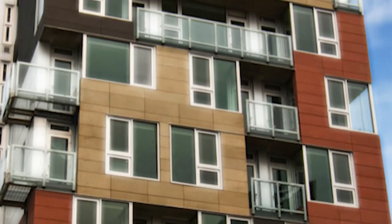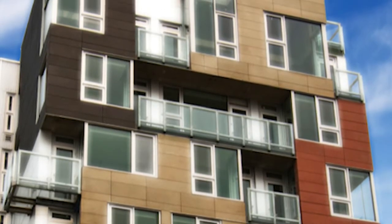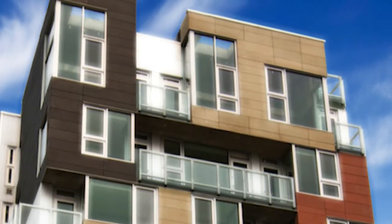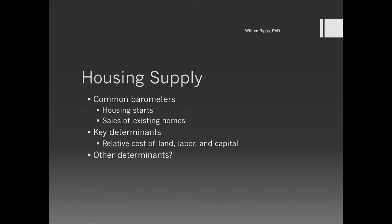Now that we've spent some time talking about basic data sources and an overview of housing markets, let's look at how we get a gut sense of what the supply is and will be in a market. Housing starts, building permits, construction dollars, and sales of existing homes are good barometers for current housing supply. The relative cost of land, capital, and the ability for people to get financing are other determinants — and a large part of why the country experienced a downturn in 2008.